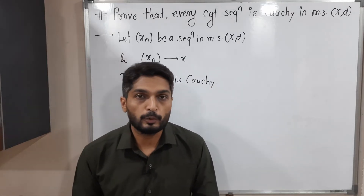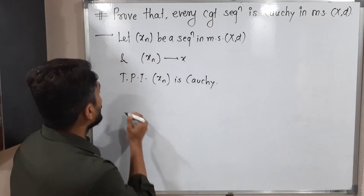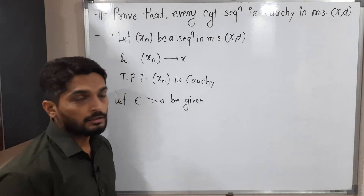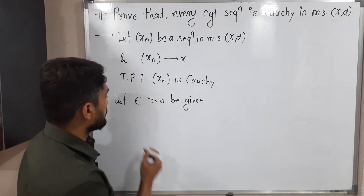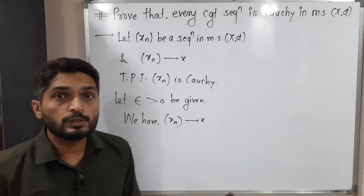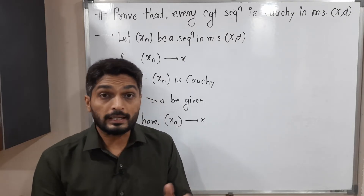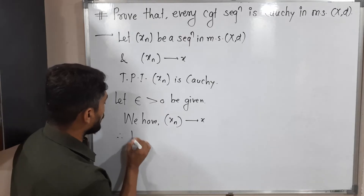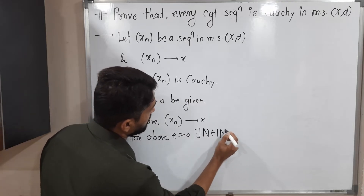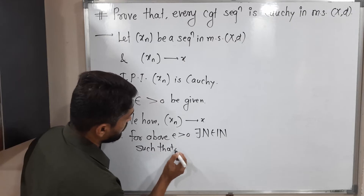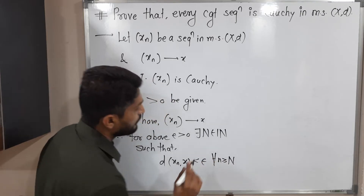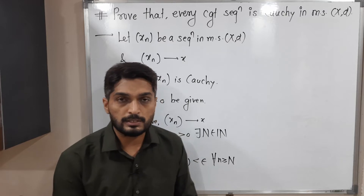Using the epsilon definition, let epsilon greater than zero be given. Since the sequence xn converges to x, by the definition of a convergent sequence, for the above epsilon greater than zero, there exists a natural number N such that d(xn, x) is less than epsilon for all n greater than or equal to N. Since epsilon is a positive real number, epsilon over 2 is also positive, so we replace epsilon by epsilon over 2 for adjustment — call this equation (1).